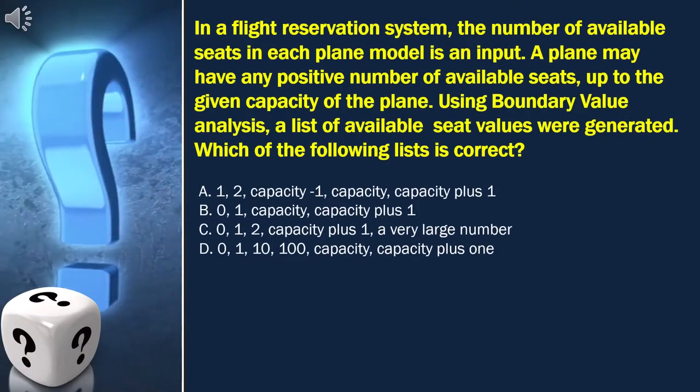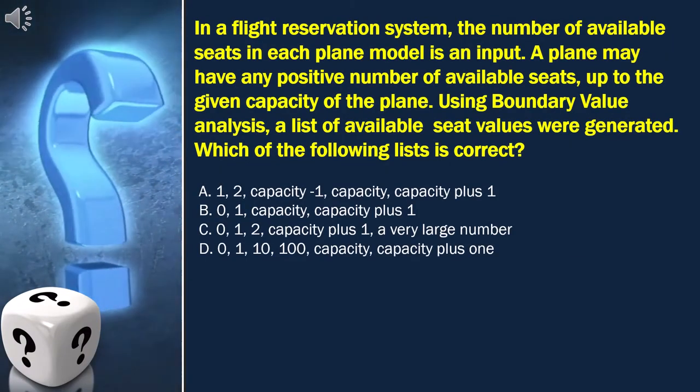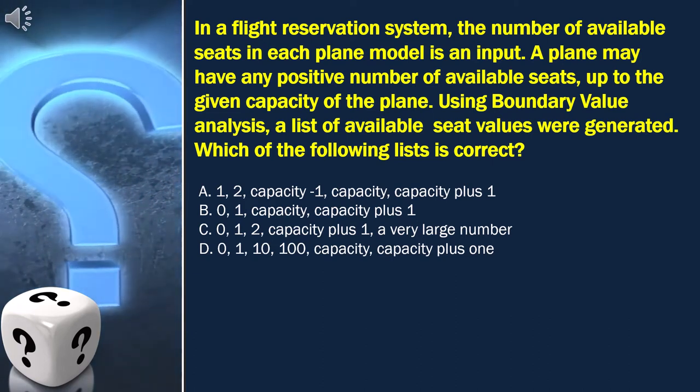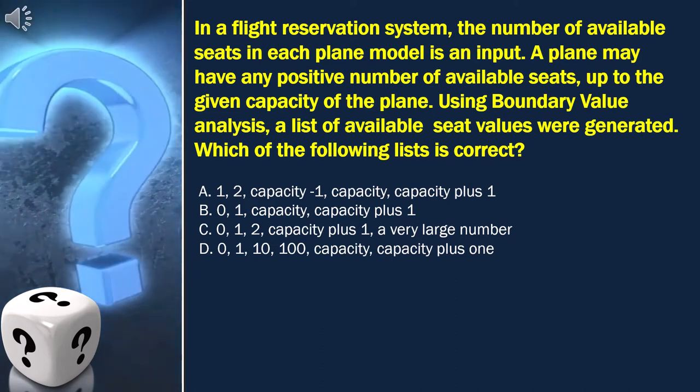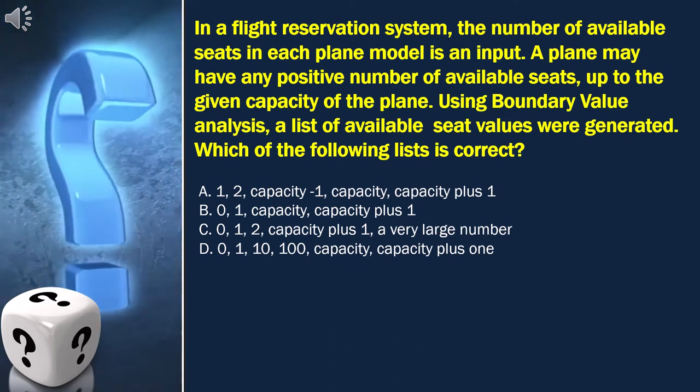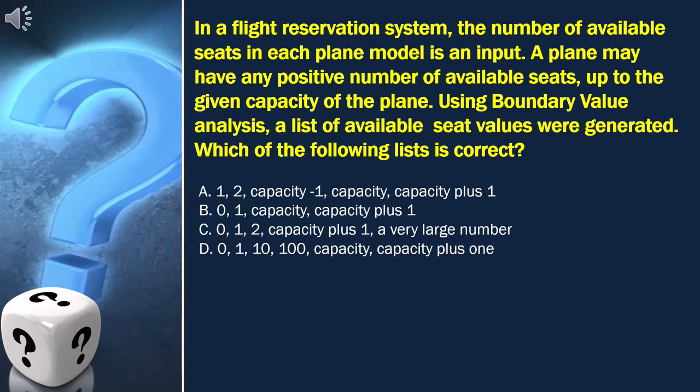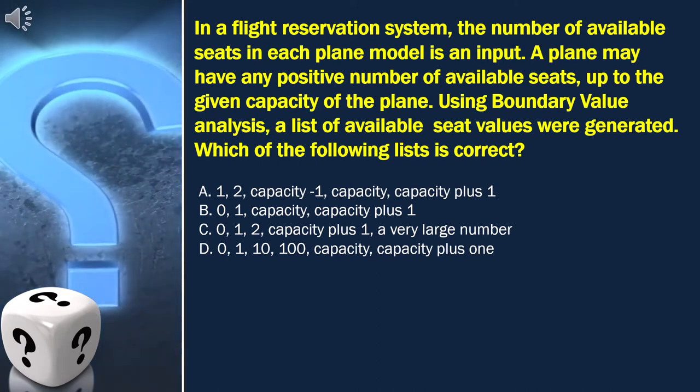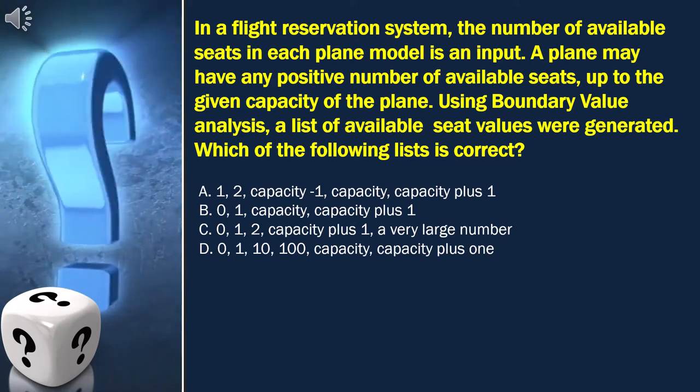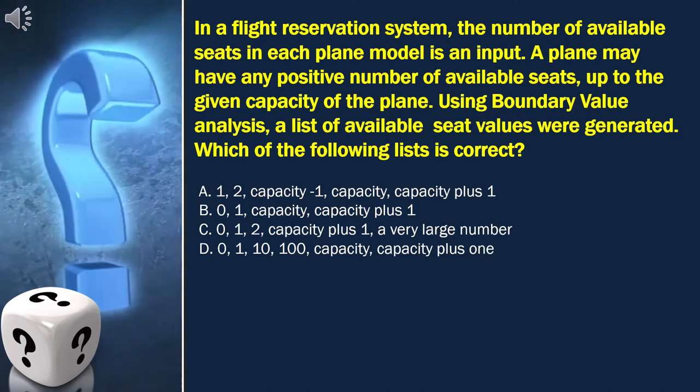Here the question is, in a flight reservation system, the number of available seats in each plane model is an input. A plane may have any positive number of available seats up to the given capacity of the plane. Using boundary value analysis, a list of available seat values was generated. Which of the following lists is correct?